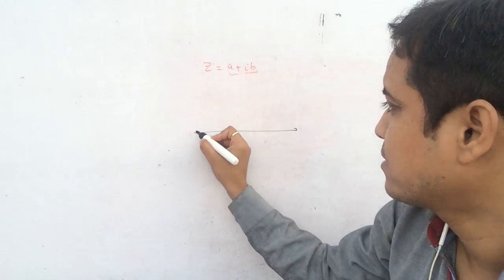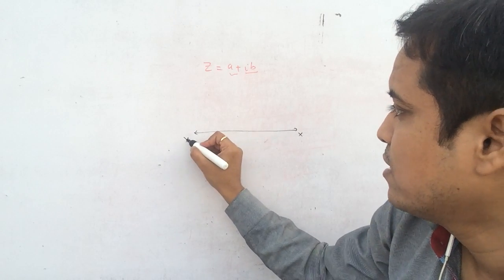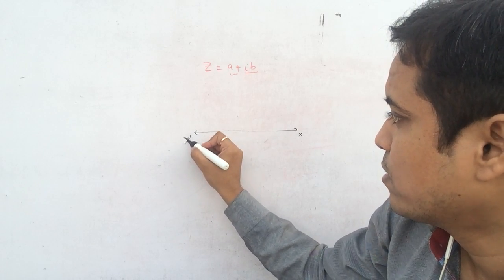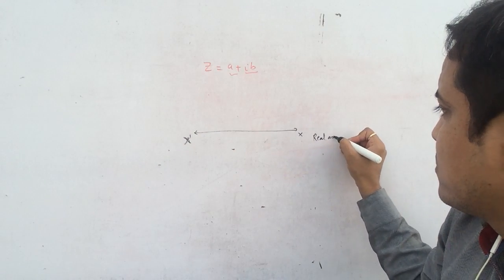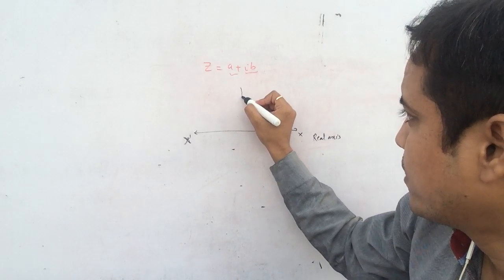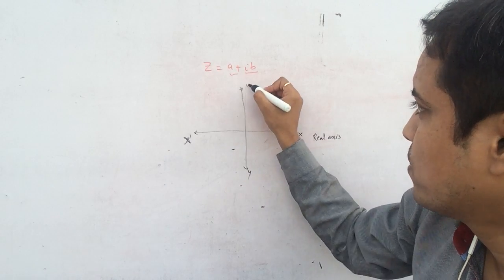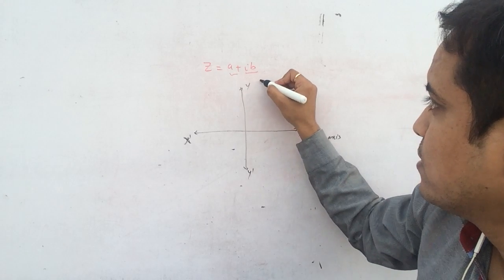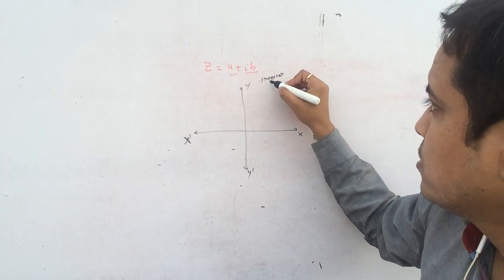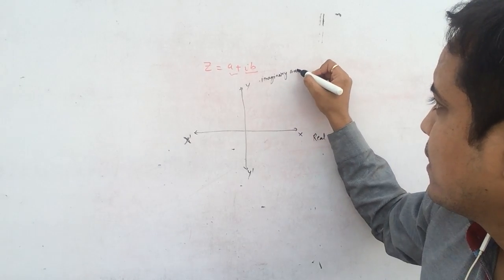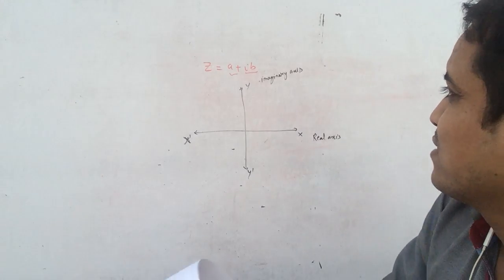In this plane, there is a horizontal axis represented as XX dash — this is called the real axis. The vertical one is called YY dash — it is called the imaginary axis. So we have the real axis and the imaginary axis.